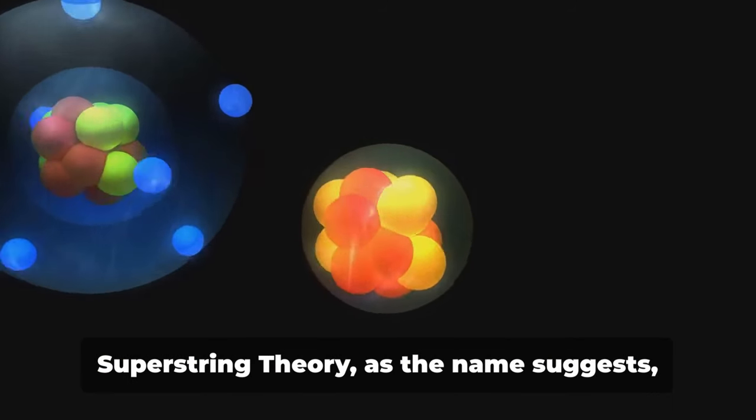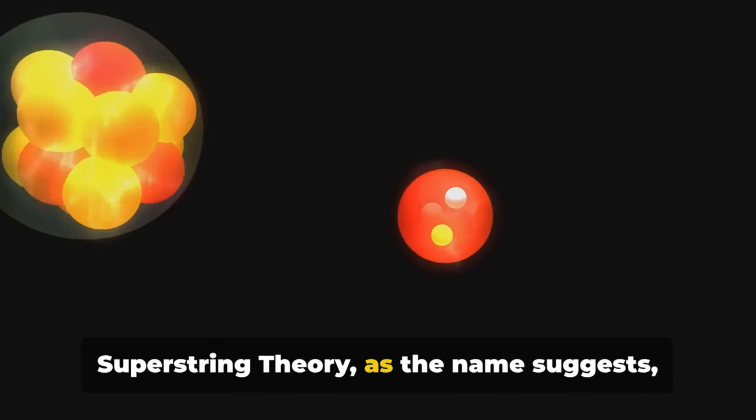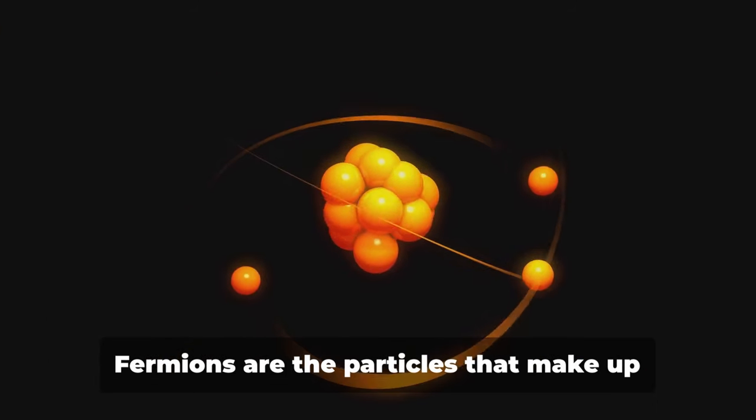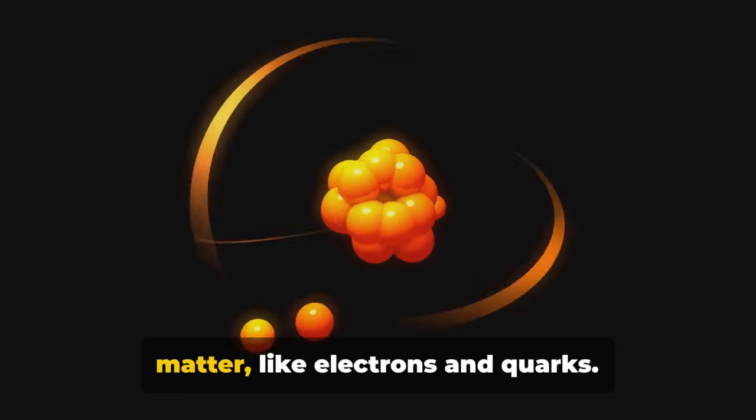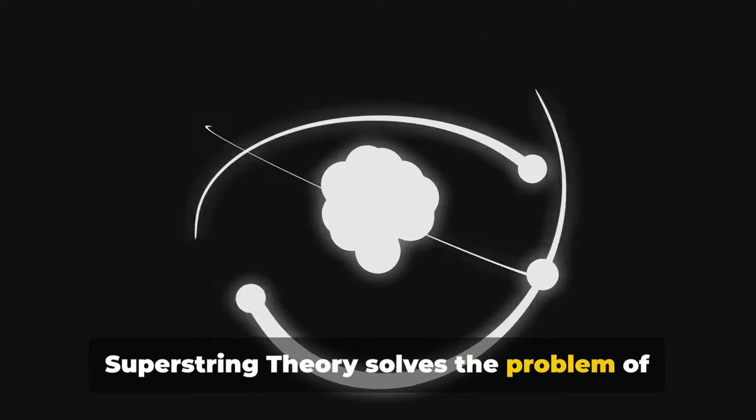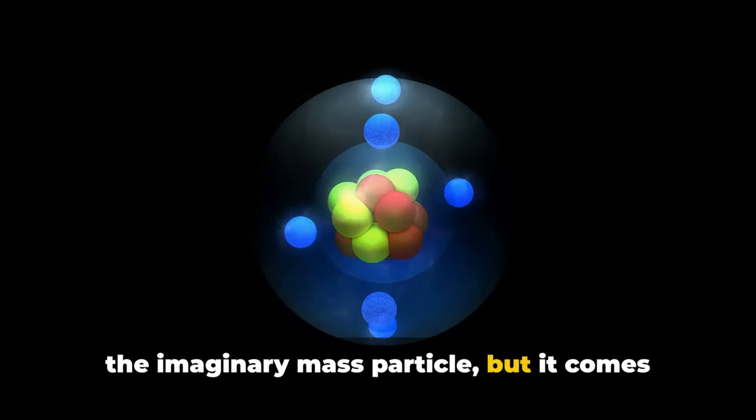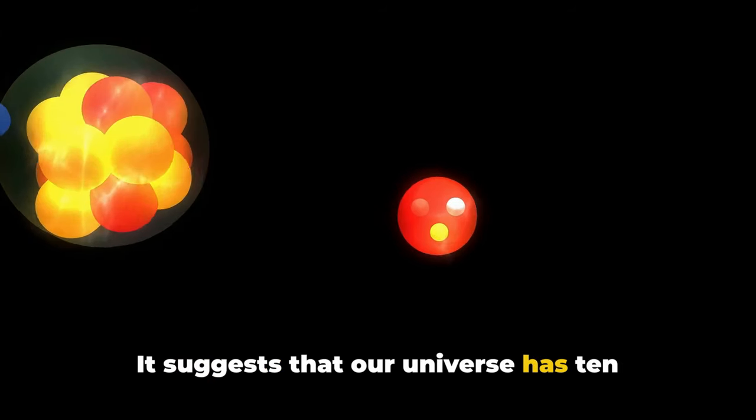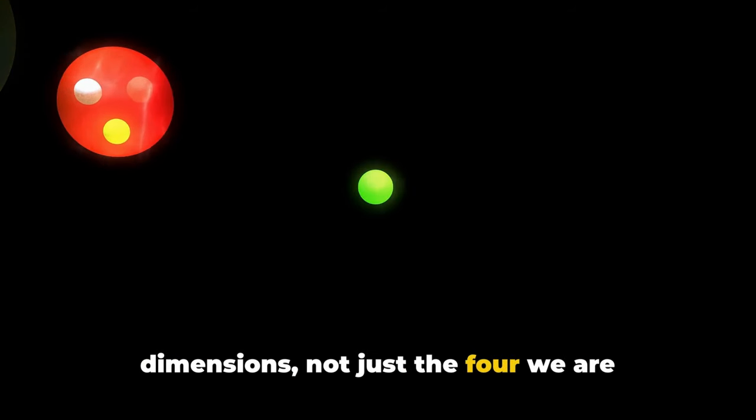This brings us to the next iteration: superstring theory. Superstring theory, as the name suggests, includes both bosons and their counterparts, fermions. Fermions are the particles that make up matter, like electrons and quarks. Superstring theory solves the problem of the imaginary mass particle, but it comes with its own twist. It suggests that our universe has ten dimensions, not just the four we are familiar with.